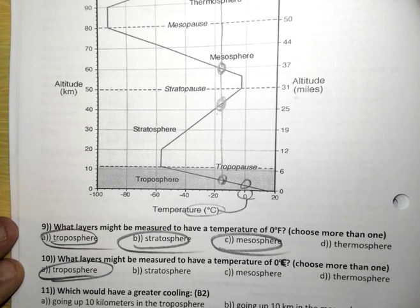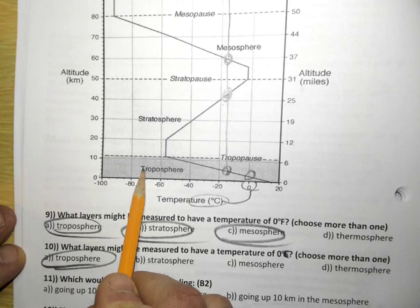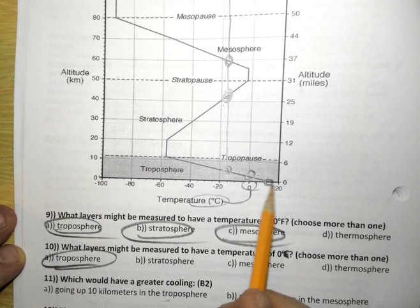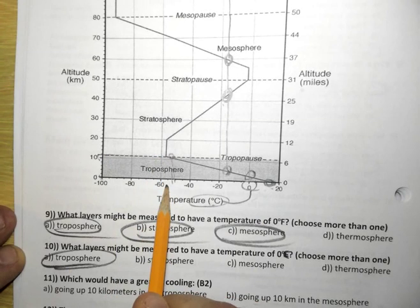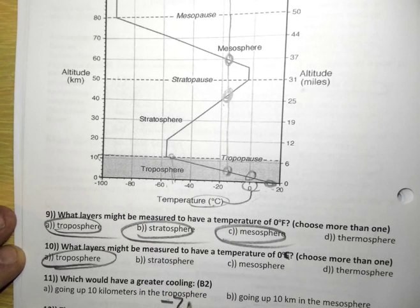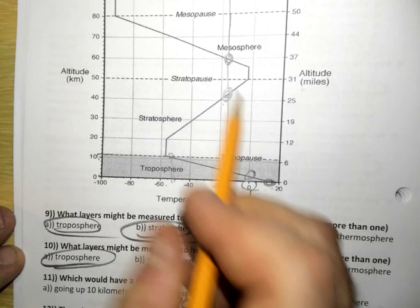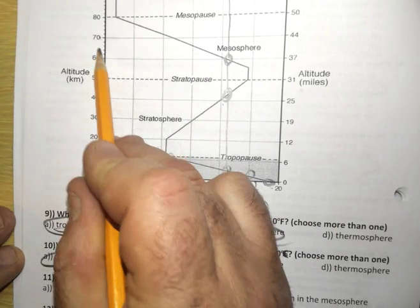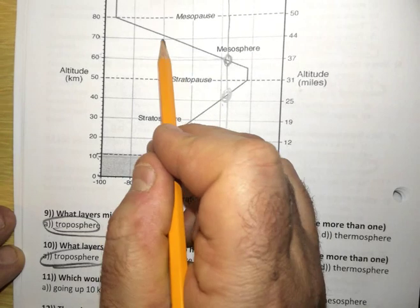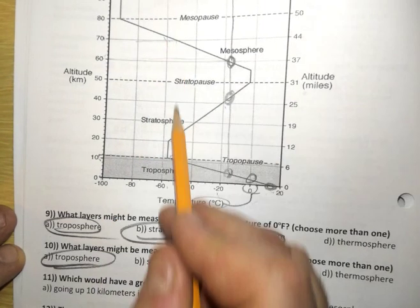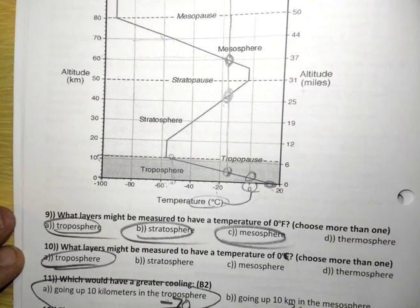Which would have greater cooling? Ten kilometers going up in the troposphere, or ten in the mesosphere? As we go from zero to ten in the troposphere, we start off at the zero with a temperature of about twenty degrees Celsius, almost. By the time we rise up to ten miles, it's about negative fifty. That's a difference of minus seventy. Going from the ground up to here is a drop of seventy degrees. Going up ten kilometers in the mesosphere, well, let's just take from sixty to seventy kilometers. At sixty kilometers, it's about negative twenty degrees Celsius. At seventy kilometers up, it's about negative fifty. Negative twenty, negative fifty is a negative thirty drop. So the bigger cooling, the greater cooling is going to be in the troposphere.